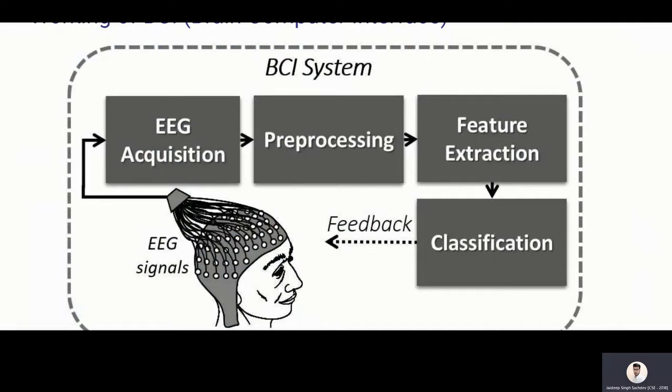Now, how does this BCI work? Well, first the person wears the EEG headset. From the EEG headset, we get these EEG signals. These EEG signals are then pre-processed and the feature extraction method is done on that because these signals are very light or very less and we cannot detect drastically into that.